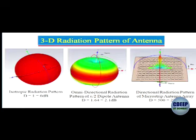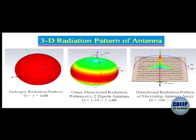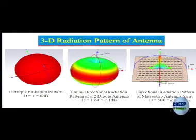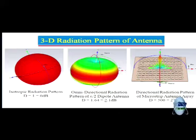We prefer a side lobe level of less than 20 dB. Now, regarding directivity — directivity of an isotropic antenna is 1, since it radiates equally in all directions. Taking 10 log of 1 gives 0 dB. For a dipole antenna, directivity is 1.64, meaning the maximum radiation divided by what it would be if it radiated uniformly in all directions. That gives 10 log of 1.64, which is about 2.1 dB.